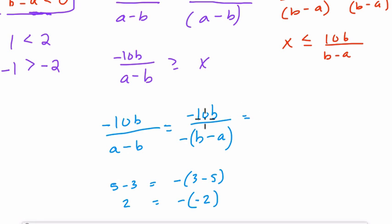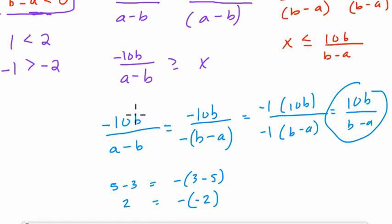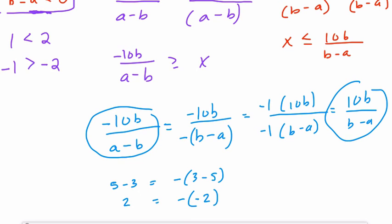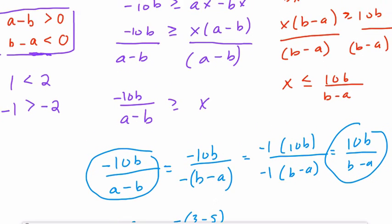So now we have negative 10b over negative b minus a, a negative parentheses b minus a. That's really the same thing as negative 1 times 10b over negative 1 times b minus a. And those two negative 1s divide to positive 1, and we have 10b over b minus a. So you can see that that 10b over b minus a equals negative 10b over a minus b. So they are equivalent.